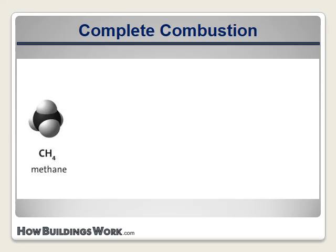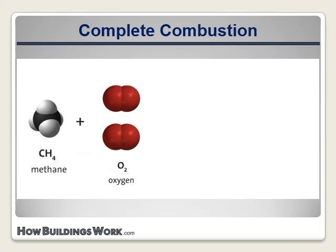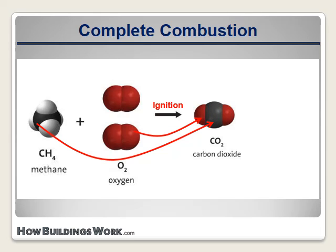The other component necessary for combustion is oxygen. It usually exists in pairs of oxygen atoms, so we call it O2. When the two compounds are mixed and ignited, both molecules are broken apart into their component atoms and a lot of heat is released from those broken chemical bonds. Then the atoms recombine into new molecules. The carbon from each methane molecule combines with two oxygen molecules to form carbon dioxide, or CO2. The 'di' in dioxide means two—two oxygen atoms in the molecule. Carbon dioxide doesn't present much of a hazard. We exhale it, plants consume it. It's been identified as a problematic greenhouse gas, but that's a story for another course.